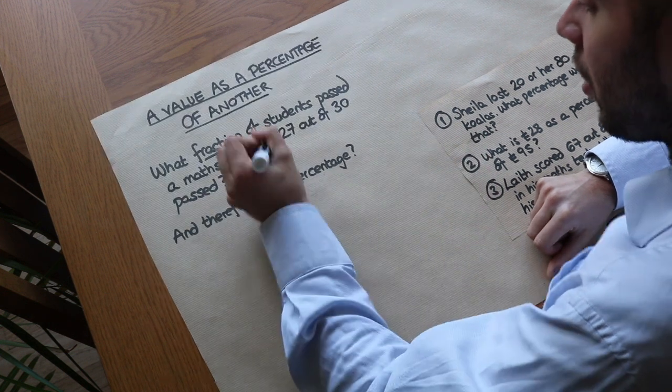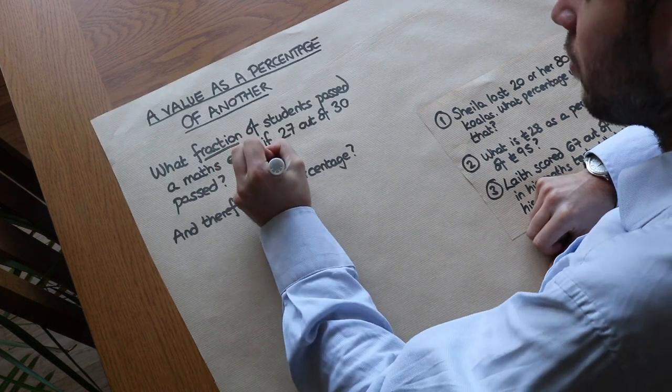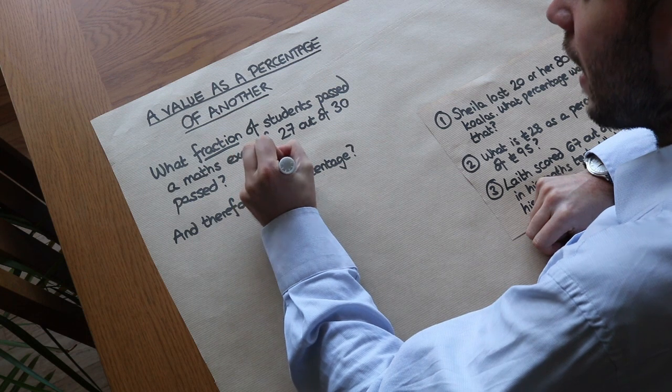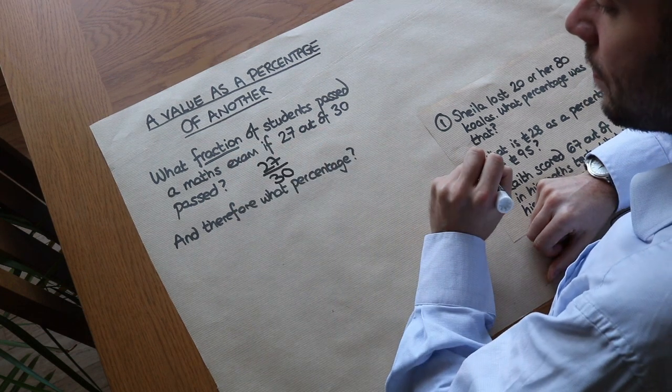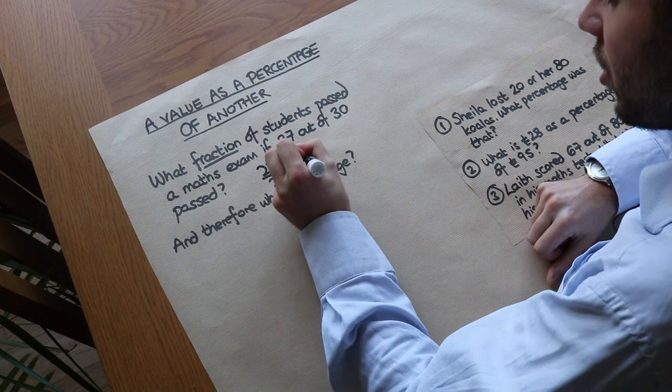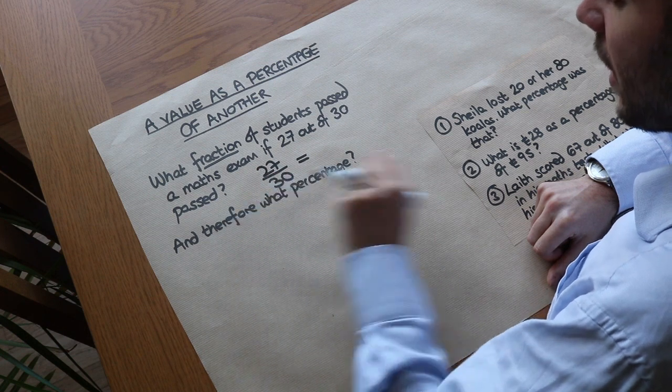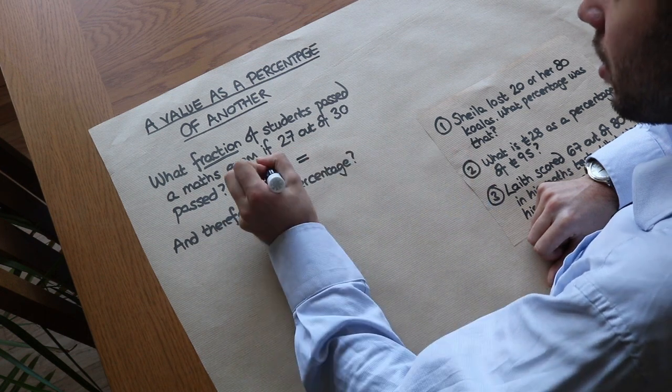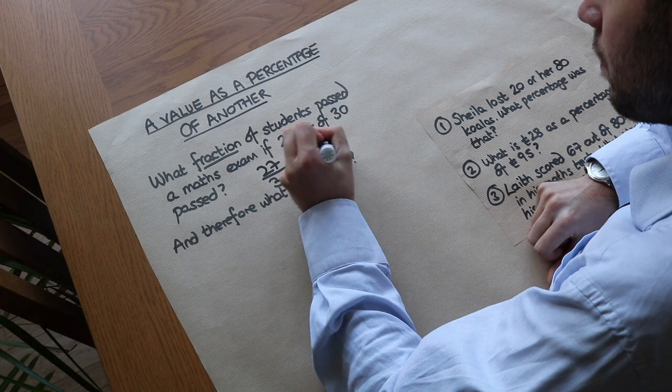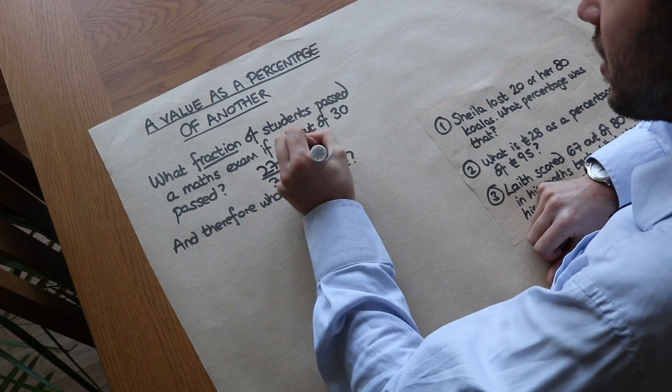Well, the fraction of students that passed is 27 out of 30, and we can write that as a fraction like this. Now if you simplify that fraction, if we divide both the numerator and the denominator by 3, 27 becomes 9 and 30 becomes 10.